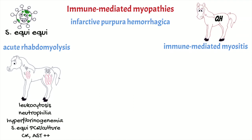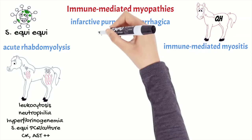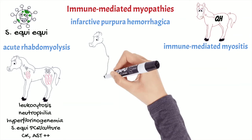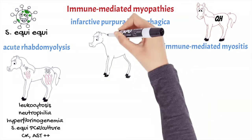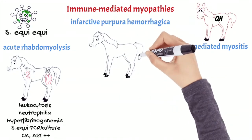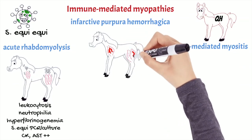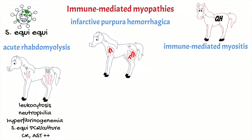Purpura hemorrhagica is an immune-mediated vasculitis. You can find the mechanism in the video on types of hypersensitivity reactions. In this case the vessels affected are also those of skeletal muscles. Affected horses develop edema of limbs, petechiae on the gums, lameness and stiffness with swelling on muscle masses.